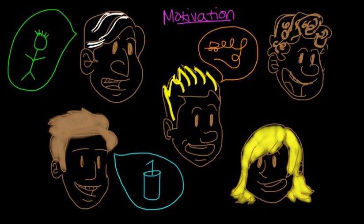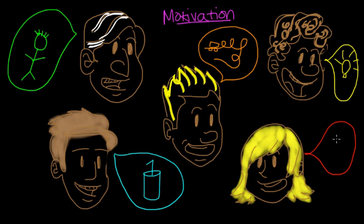The fourth approach is the cognitive approach, and this one is pretty straightforward. It focuses on our rationale and decision-making ability — like a light bulb going off in our head. The last approach is called Maslow's hierarchy of needs, which says that we're motivated to satisfy certain needs in a particular order. These needs must be fulfilled from the most basic needs at the bottom all the way to the top, which is why we can draw a pyramid to illustrate this.